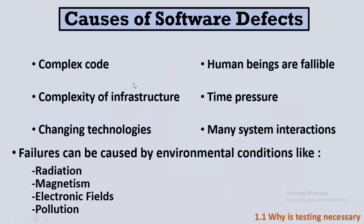Why do bugs or defects appear in software? There are many reasons. The first is complex code — you may be a good developer but working on complex code. The second reason is that human beings are fallible; we all make mistakes. There may also be a complex infrastructure, time pressure to deliver the software quickly, or changing technologies and programming languages — all increasing the possibility of mistakes. Many system interactions are also internal causes of defects.